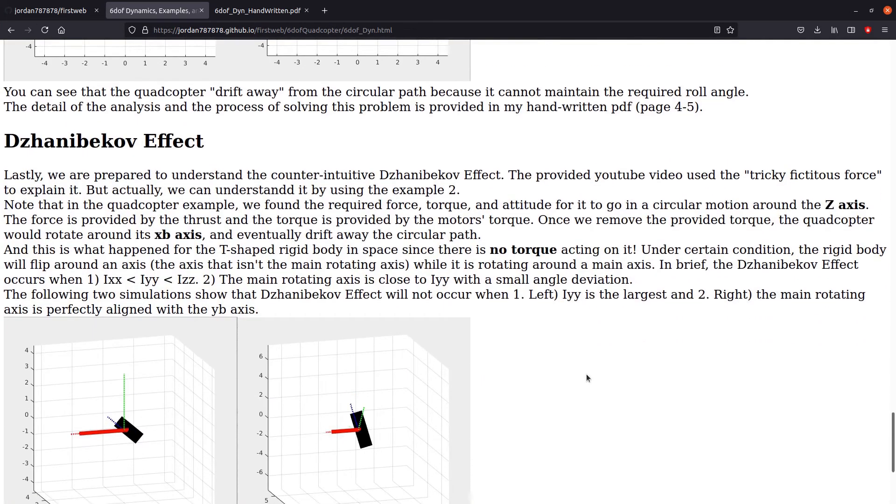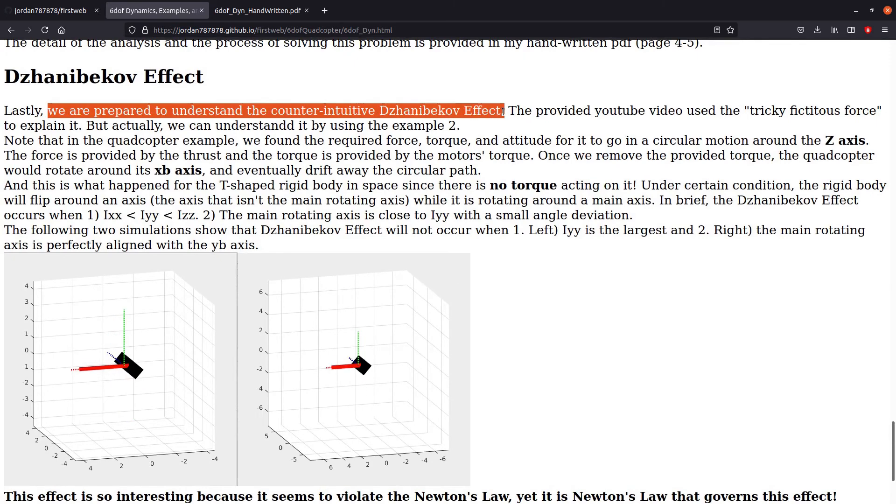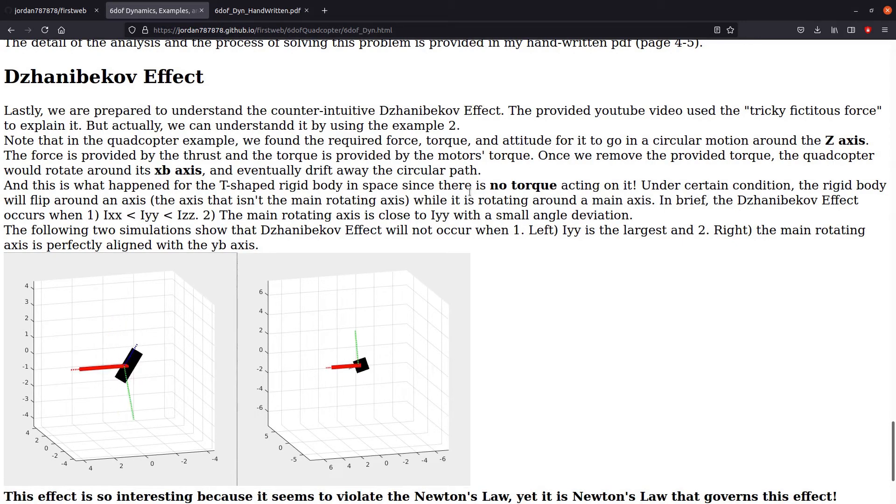So now, I think we are prepared to understand the counterintuitive Dzhanibekov effect. We can understand this effect using the quadcopter example. Remember, if the vehicle doesn't generate the torque, it will deviate from its path, which means that it will rotate in another axis, which is what actually happens in space.